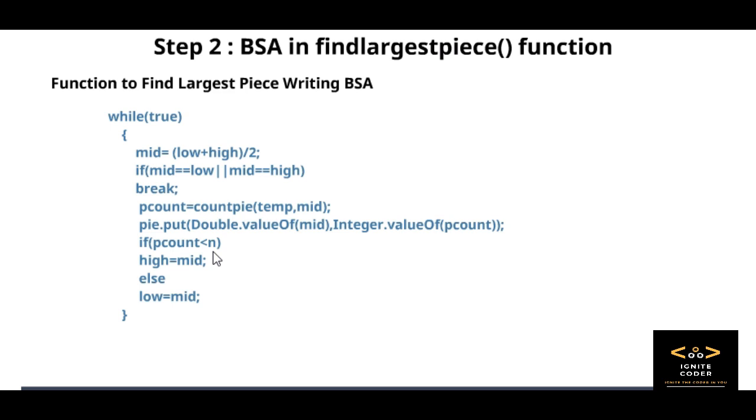Beyond the mid, we won't get any answer, so we just neglect that. Else if P count is greater than or equal to N, we make low equals mid. And we are checking a condition here: if mid equals low or mid equals high, this is to terminate the loop when mid, low, and high are equal, which obviously means we got the answer.